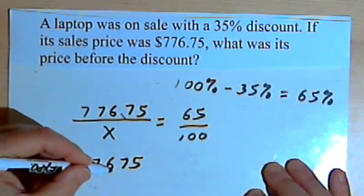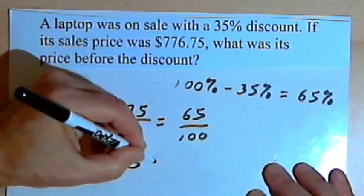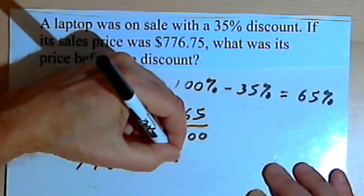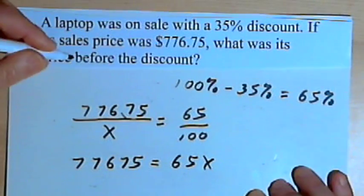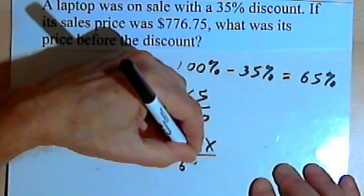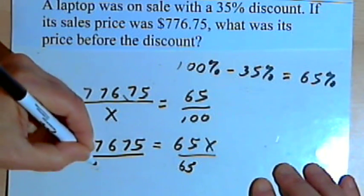And then I have to multiply the x times 65. That'll be 65x. And to solve for x, I'll just divide both sides of the equation by 65.